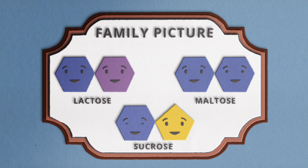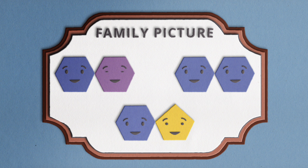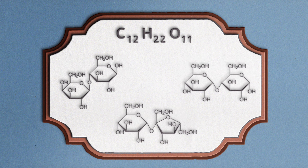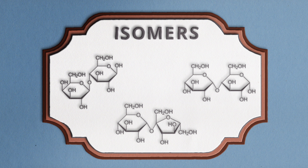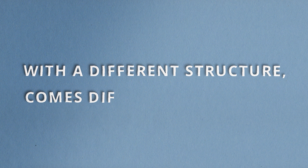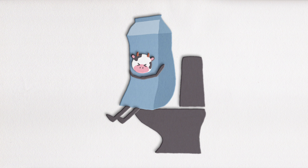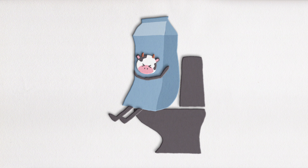Time for a disaccharide family picture — the three disaccharides we just talked about with their different structures. And as you can see from the diagram, despite the fact that these sugars have the same chemical formula, they don't have the same structure. A fancy term to describe that is isomers — they are isomers of one another. And with a different structure comes different properties, which explains why lactose intolerance is common but allergies to sucrose and maltose aren't.